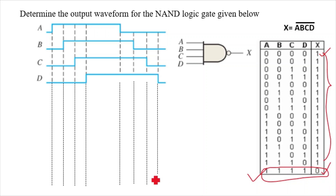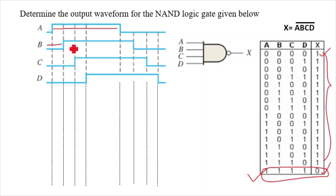We need to find where all inputs are 1 at the same time. Let's go one by one. Looking at input A — A is 0 here, and from this value to this value it is 1. Now moving to B — B is 0 for this initial portion, then B becomes 1 and A is also 1 here.